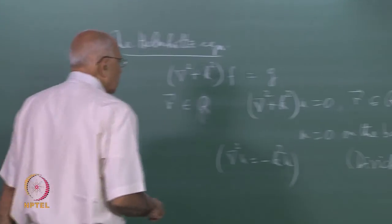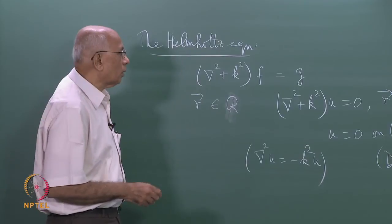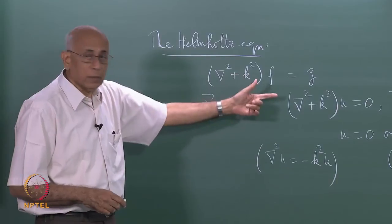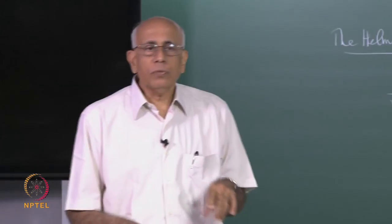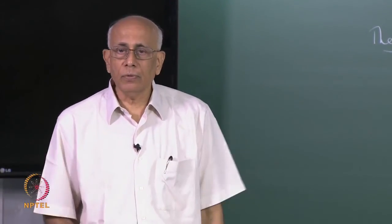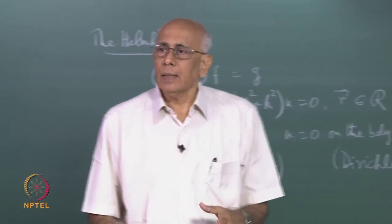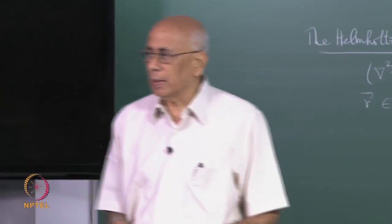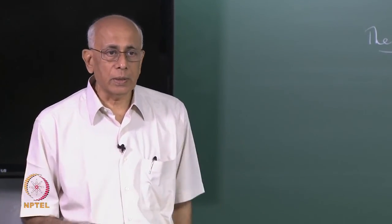That is one class of problems. My immediate purpose here is not to look at that — it is a well-studied class of problems — but rather to find the particular integral for the inhomogeneous equation. More specifically, I would like to find the Green's function for del squared plus k squared, the fundamental Green's function, satisfying the boundary condition that the Green's function vanishes at spatial infinity. This is in the same spirit as the Green's function we already found for the Laplacian operator, the diffusion equation, and so on.